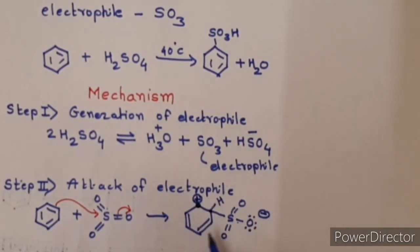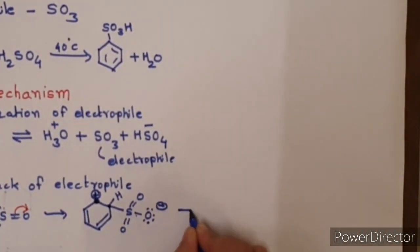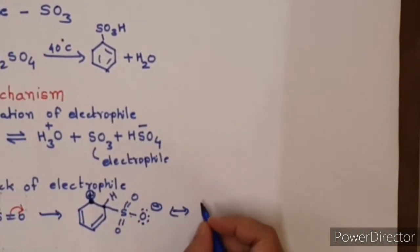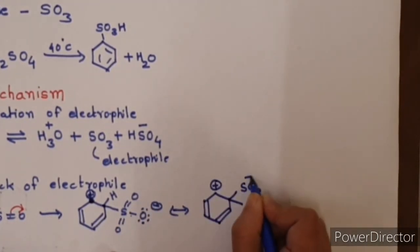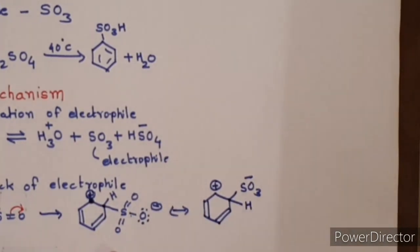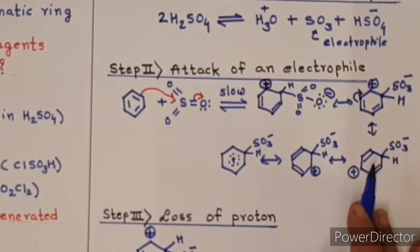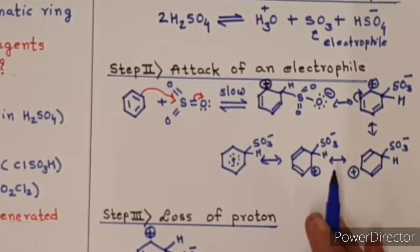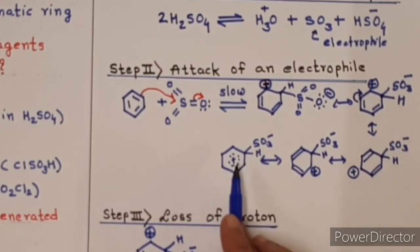This is the structure, but this is difficult to show every time. You can simply show this like this: instead of writing all this, you can write SO3- and H. Now, you know very well how to write resonating structures. If you are not still clear with it, you can watch my video on nitration. Here I have shown resonance hybrid where positive charge is delocalized over the ring.